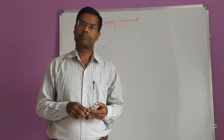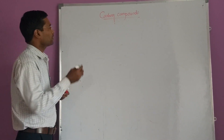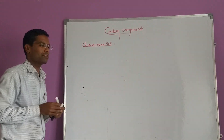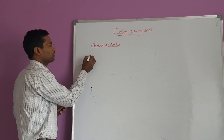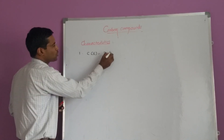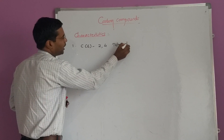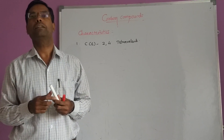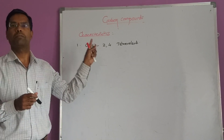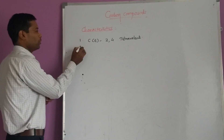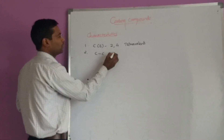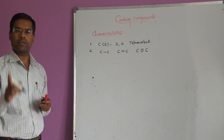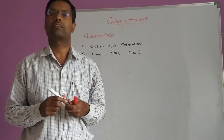Today we are discussing the properties or the characteristics of carbon. The first important characteristic is that carbon has the atomic number 6; its electronic configuration is 2,4, so carbon is tetravalent. At a time, carbon can form 4 single bonds with the same or different atoms. Tetravalency of carbon is the first important property. The second important property is that carbon can form a single bond, a double bond, or a triple covalent bond — so formation of the covalent bond is the second important characteristic of carbon.